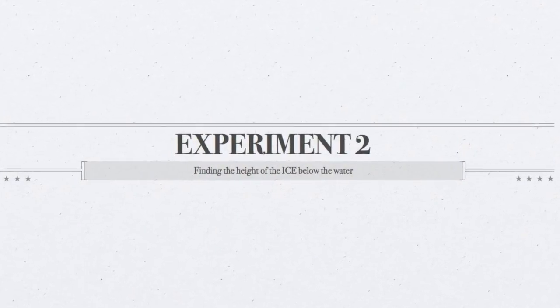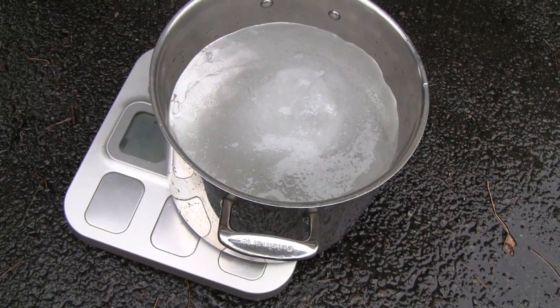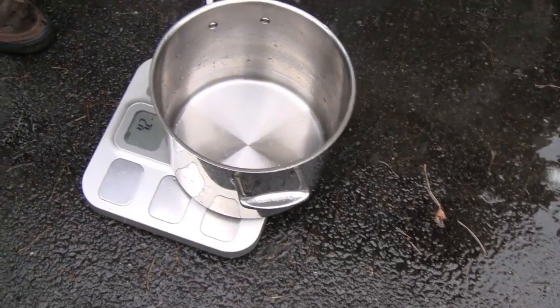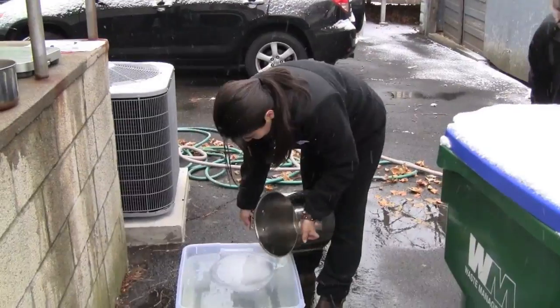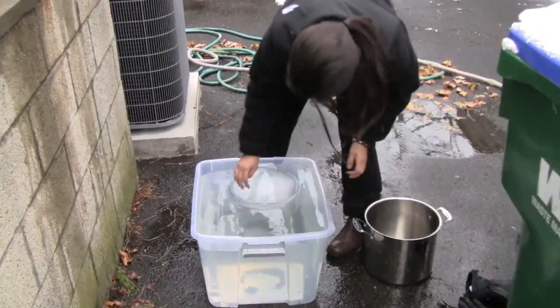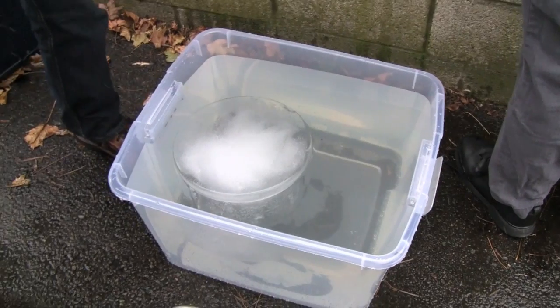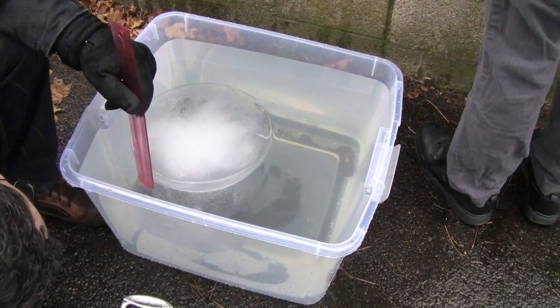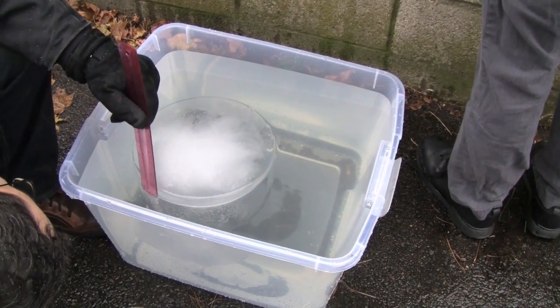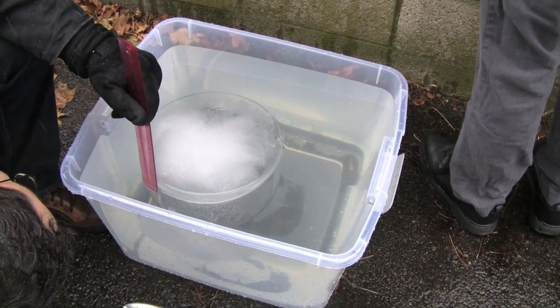For the second experiment, repeat the steps as before. Weigh the block and measure its diameter. Measure its height and place in the water container. Measure the distance between the top of the block and the surface of the water. In this case, the height above the surface will be used only to confirm experimental results.